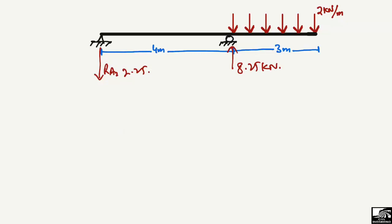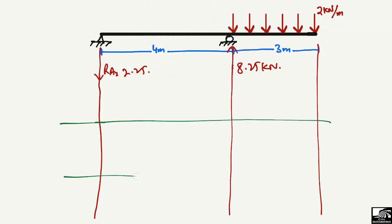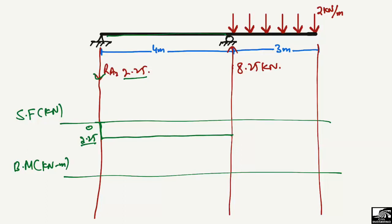To draw the shear force and bending moment diagram, we draw reference lines: one reference line for the shear force diagram and one for the bending moment diagram. Shear force is in the unit of kN and bending moment in the unit of kN·m. Starting from position A, R_A = 2.25 kN is acting downward, so we bring the diagram downward to −2.25 kN. There is no load on the 4-meter span, so it remains a constant horizontal line. At B, R_B = 8.25 kN acts upward, so: −2.25 + 8.25 = +6 kN.